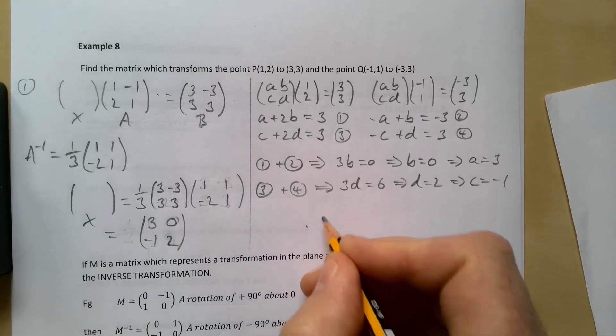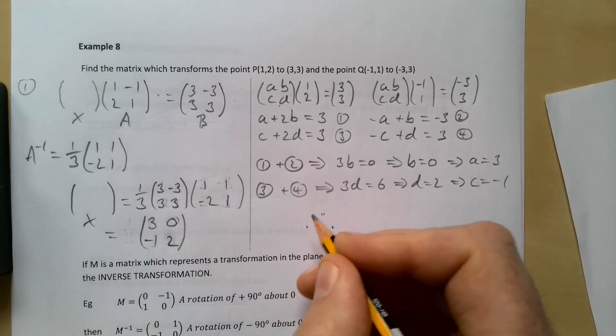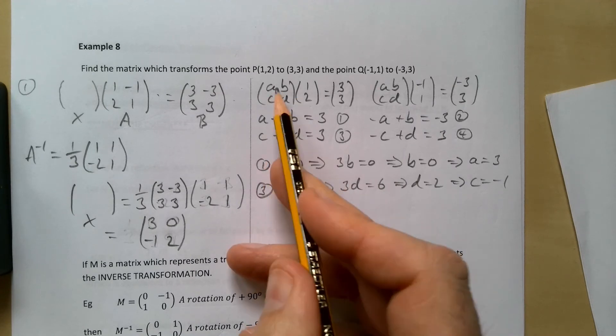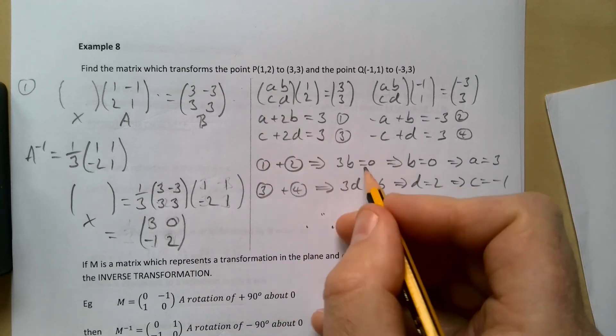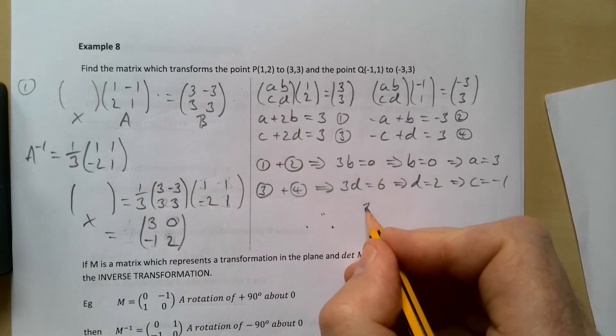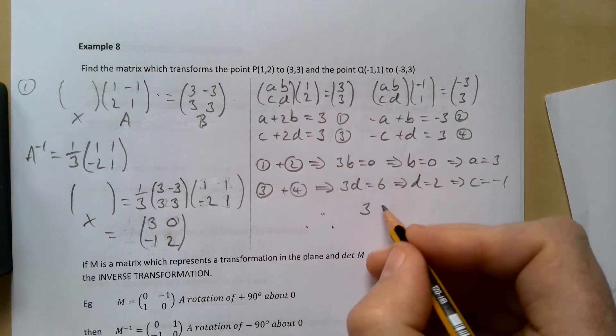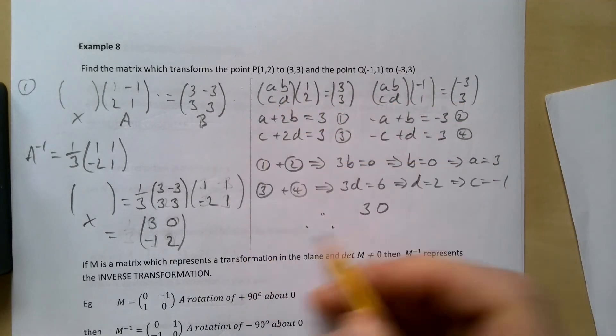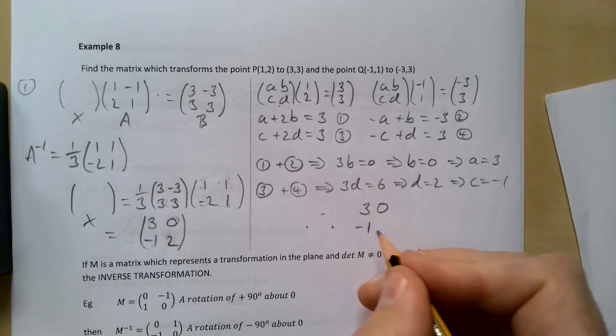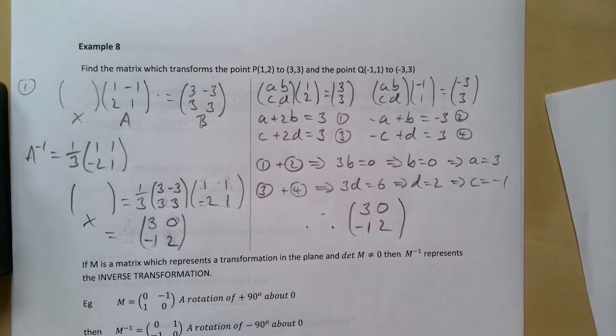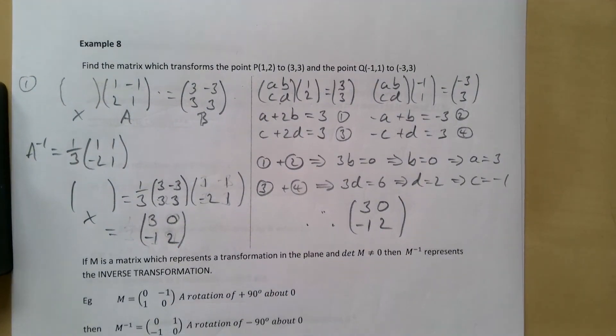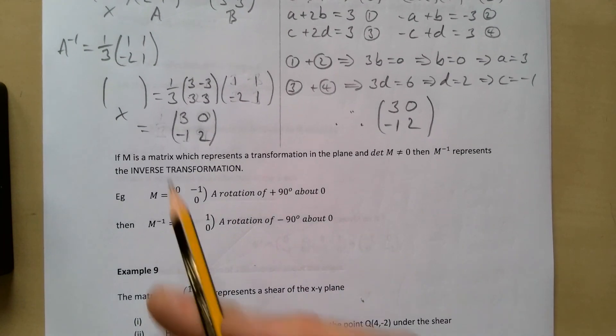So we had our original matrix [a b; c d], so a is 3, b is 0, c is minus 1, d is 2. So the matrix required is that and the good news is it's the same as the one over here, so it looks like it's worked.